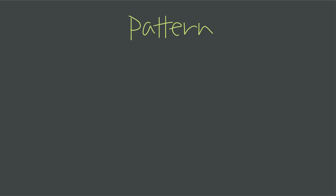But why is that actually the case? How do we really know that a negative exponent is telling us to do that? We can prove this to ourselves if we look at the pattern that starts with positive exponents. Let's think about 2 to the positive 3. We know that that's equal to 2 times 2 times 2. Now, let's think about what happens when we want to step down the exponent by 1 — so instead of 2 cubed, we want to find 2 squared.